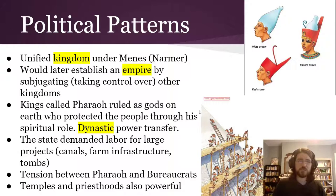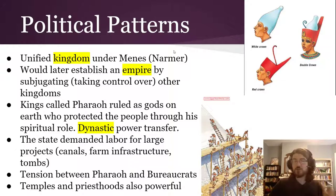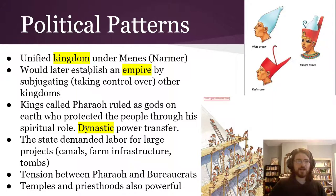Here are some key political patterns. The whole area of Egypt — upper and lower — was united under a pharaoh way far back in time, who is sometimes called Menes, or maybe Narmer based on some archaeological evidence. There was a crown for one half of Egypt and a crown for the other half, and if you conquered both, you got to wear a double crown. That's pretty cool.